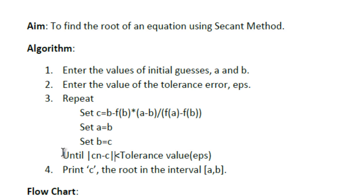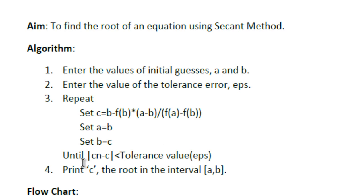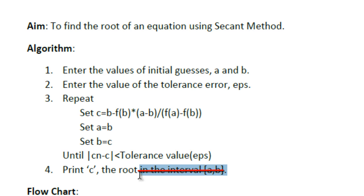If the result is within the desired tolerance limit, we stop and print C as the root. The note about C being the root within interval A and B can be removed — C doesn't need to be bounded by A and B specifically. That's the complete algorithm for the secant method.